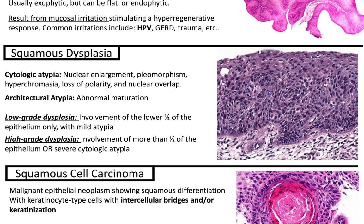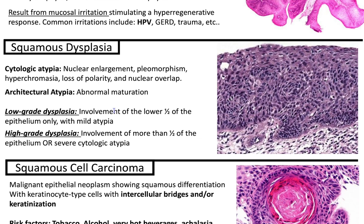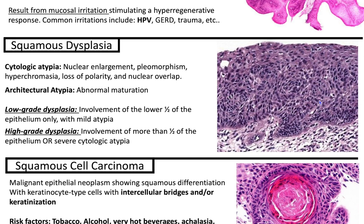Squamous dysplasia has cytologic atypia including nuclear enlargement, pleomorphism, hyperchromasia, loss of polarity, and nuclear overlap. There is architectural atypia with abnormal maturation. Low-grade squamous dysplasia involves the lower half of the epithelium only with mild atypia, and high-grade dysplasia involves more than one-half of the epithelium or severe cytologic atypia.